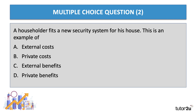Question two: a householder fits a new security system for his house — what is that an example of? That is an example of a private cost. There is a cost of fitting the new security system, though you can also make a case for a private benefit from the safety that the person then feels.